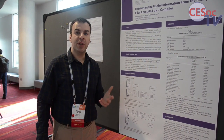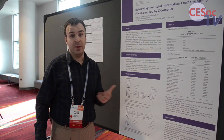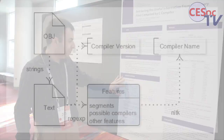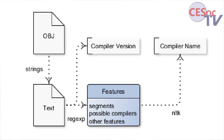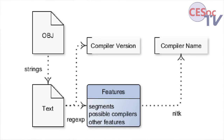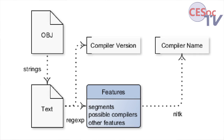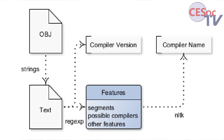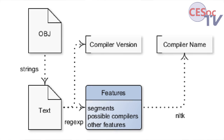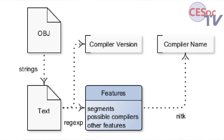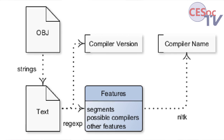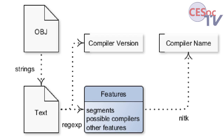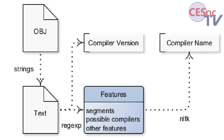So it is important to figure out the compiler name and version, and also some other data. In the training process in this work, different object files were pushed into a feature extractor using the naive Bayes classifier. The machine learning algorithm was extracting features, segments, and other set information from the binary files and matching them with the compiler name.